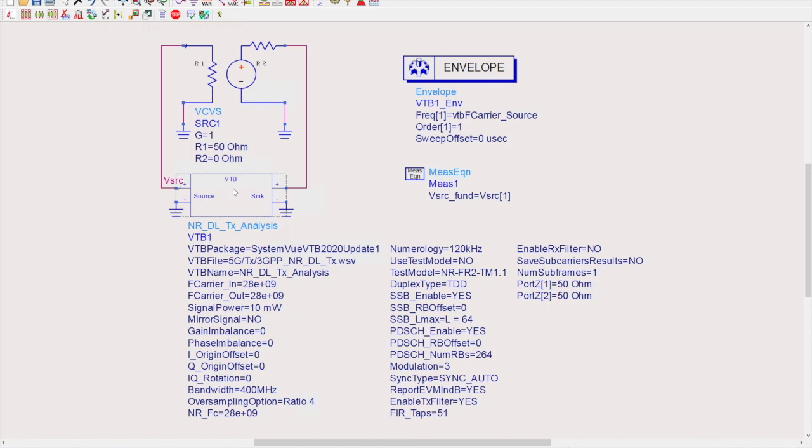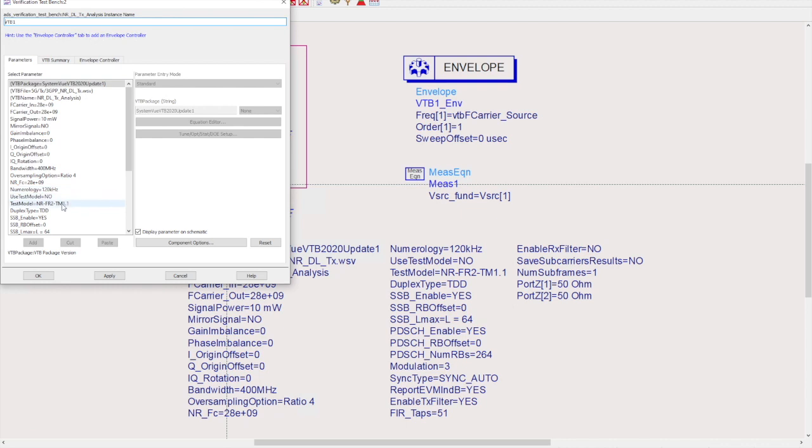We can use a built-in test model. So here we have some for FR1 which is sub 6 GHz or for FR2 which is for millimeter wave. The advantage of using test models is that these have been defined by 3GPP so are standardized and could be used to compare measurements to simulation.